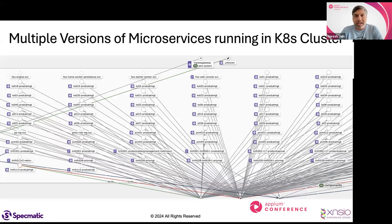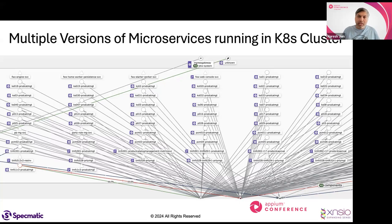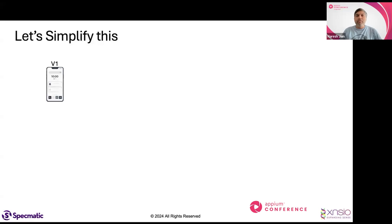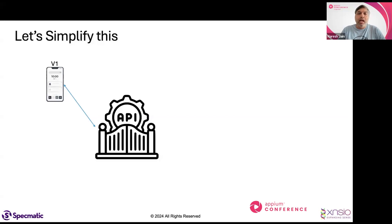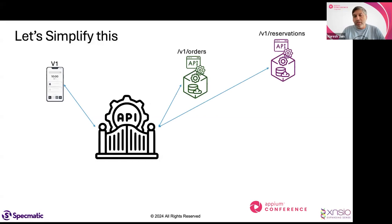These days with microservices, you may actually have multiple versions of the same microservice running in your Kubernetes cluster. Here's an example of several different versions of the same applications and microservices that have evolved, running simultaneously. So how do you ensure that all these combinations — with so many factors — when you upgrade a new piece of software, it is resilient to all these underlying changes?